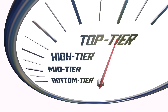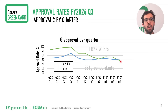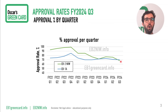That trend started to be reversed towards the end of fiscal year 2023, where the two lines basically touched each other. Then that gap was starting to build up again. But if we uncover the data for quarter three — the latest data — we see that not only do they meet again, but actually for the first time since we've been reporting this data, EB2NIW is now crossing and lower in terms of approval rates than EB1A.